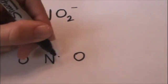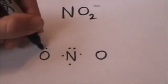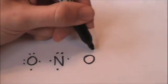Nitrogen is in group 5A so there's five valence electrons. Oxygen is in group 6A so there are six valence electrons.